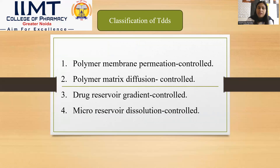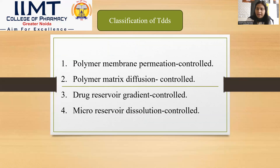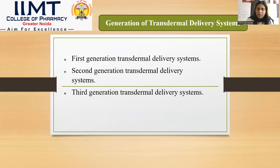What are the classifications? First is polymer membrane permeation control. Next is polymer matrix diffusion control. Third is drug reservoir gradient control, and fourth is micro reservoir dissolution control.